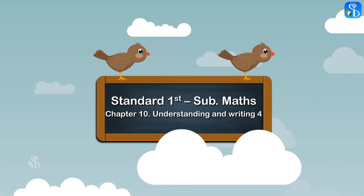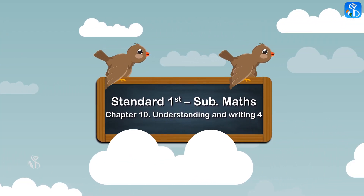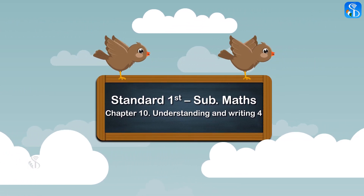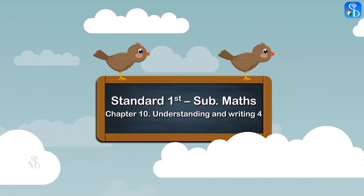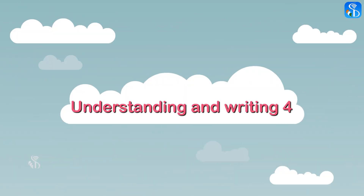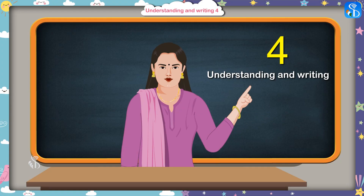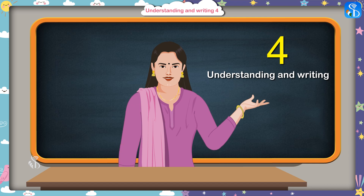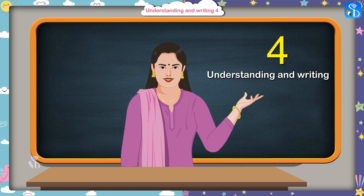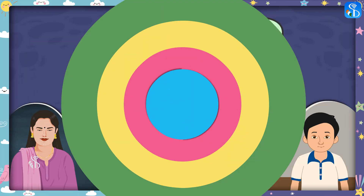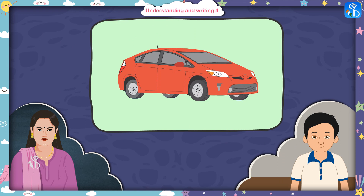Standard one, subject maths, chapter 10 — understanding and writing numbers. Today we are going to learn the number four. Come on then, let us start. Tell me children, how many wheels does a car have?